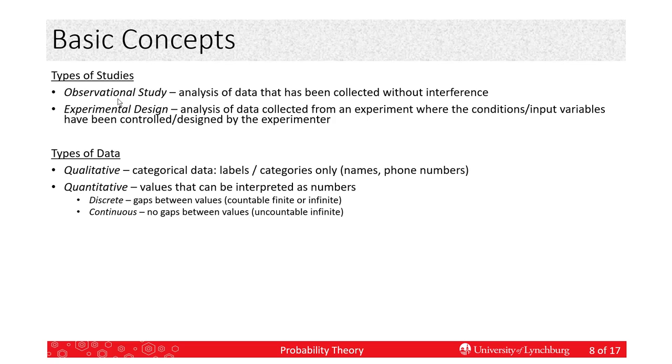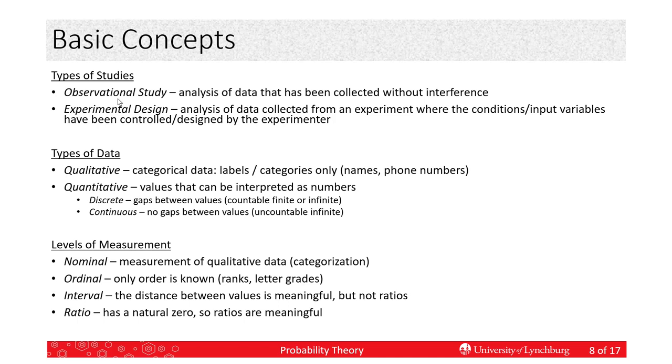So, levels of measurement. For the qualitative data, we can use the nominal level of measurement, which is really just categorization. We put them into different categories, and then we usually count how many are in each category. We can use, for some qualitative data, we can make it ordinal. Put it in order, like small, medium, large on sweatshirt sizes. But, we don't know the difference between the two. We just know that small is smaller than large.